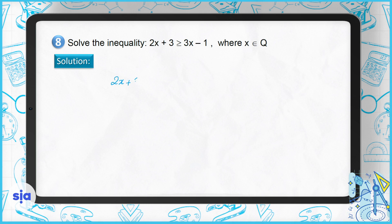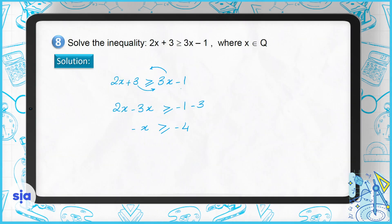Question 8: solve the inequality 2x plus 3 is greater than or equal to 3x minus 1. Move x terms to the left and numbers to the right: 2x minus 3x is greater than or equal to negative 1 minus 3, giving negative x greater than or equal to negative 4. Dividing by negative 1 requires switching the inequality sign, so x is less than or equal to positive 4. The solution set is x where x belongs to the rationals such that x ≤ 4.